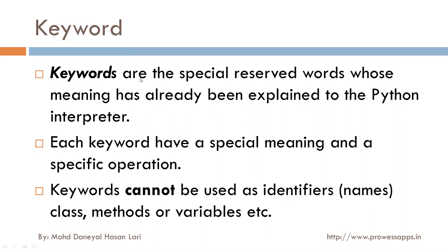Every language — if we talk about C, C++, and Java — has some reserved words. Those reserved words are called keywords. Python also has some reserved words, and those words are called keywords.